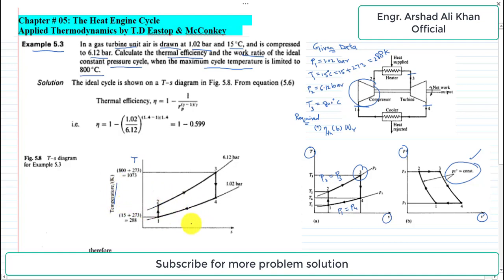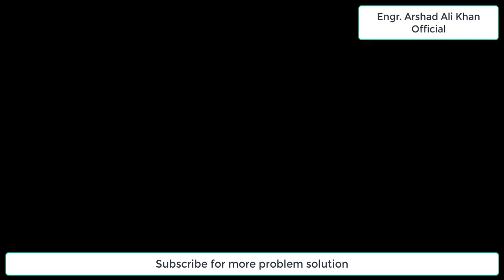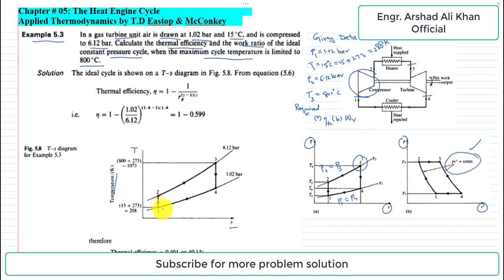Showing the specific values on the T-S diagram for this problem: T1 is 15 degrees centigrade, so 15 plus 273 equals 288 K. The highest temperature is T3 at 800 degrees C, converting to Kelvin by adding 273, giving 1073 K. The pressure at points 1 and 4 is the same: P1 equals P4 equals 1.02 bar.